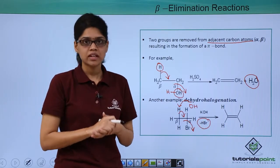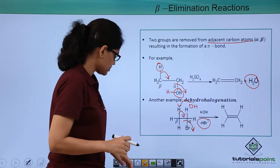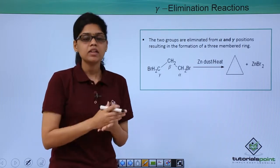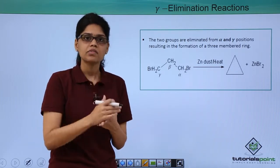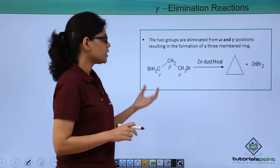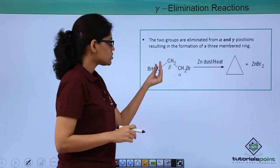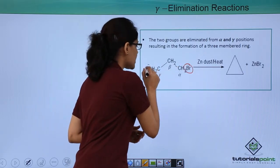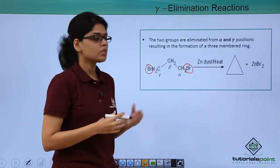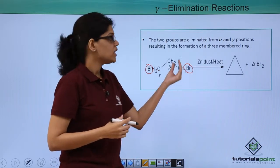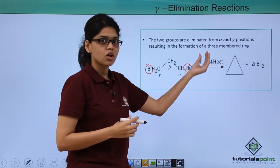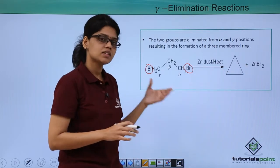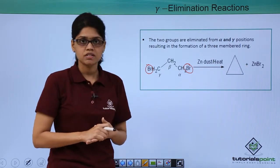The last type is gamma elimination reaction, where the eliminated groups are from the alpha and gamma carbon atoms. For example, CH2Br-CH2-CH2Br has two bromine atoms at alpha and gamma positions. When these two bromine atoms are eliminated in the presence of zinc dust or heat, you get cyclopropane along with ZnBr2. This is a typical example of a gamma elimination reaction.